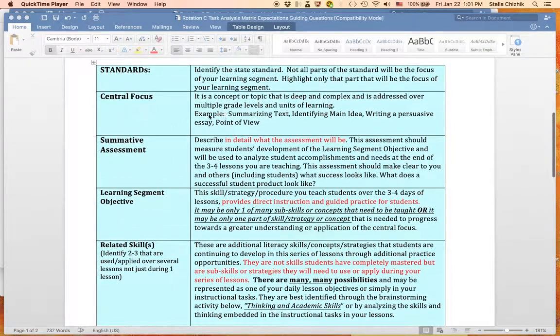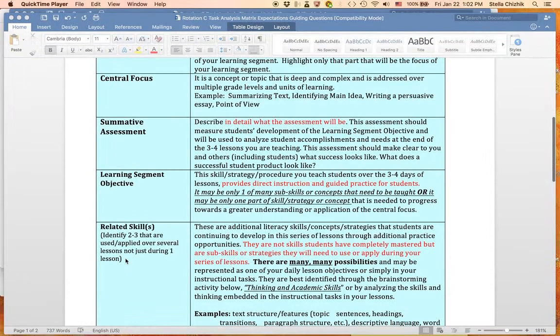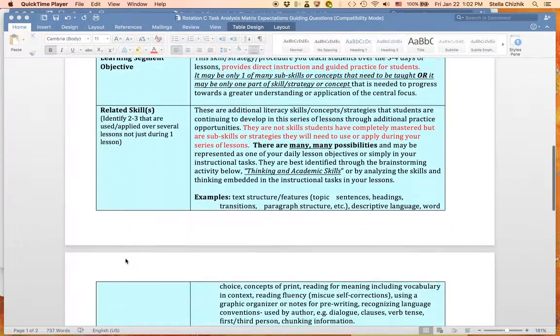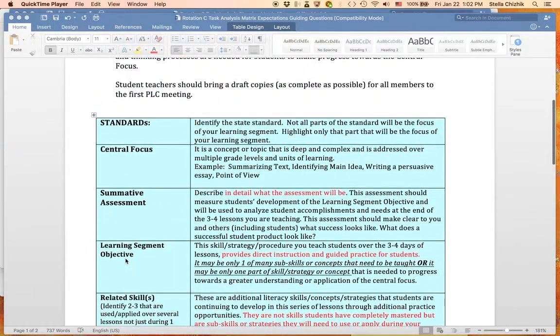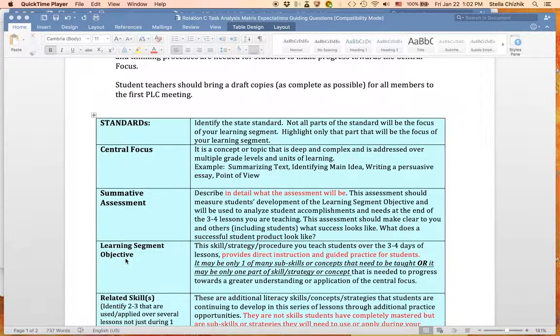And then from that, you can work backwards to identify what the learning segment objective is and what are the related skills associated with it. So after you designed your central focus, move on to design what your summative assessment is. Be very clear and descriptive about what that is. Work with your guide teacher, if you can't do it on your own, to design what that is. And then work backwards to identify what your learning segment objective or objectives are and what the related skills are for that lesson.